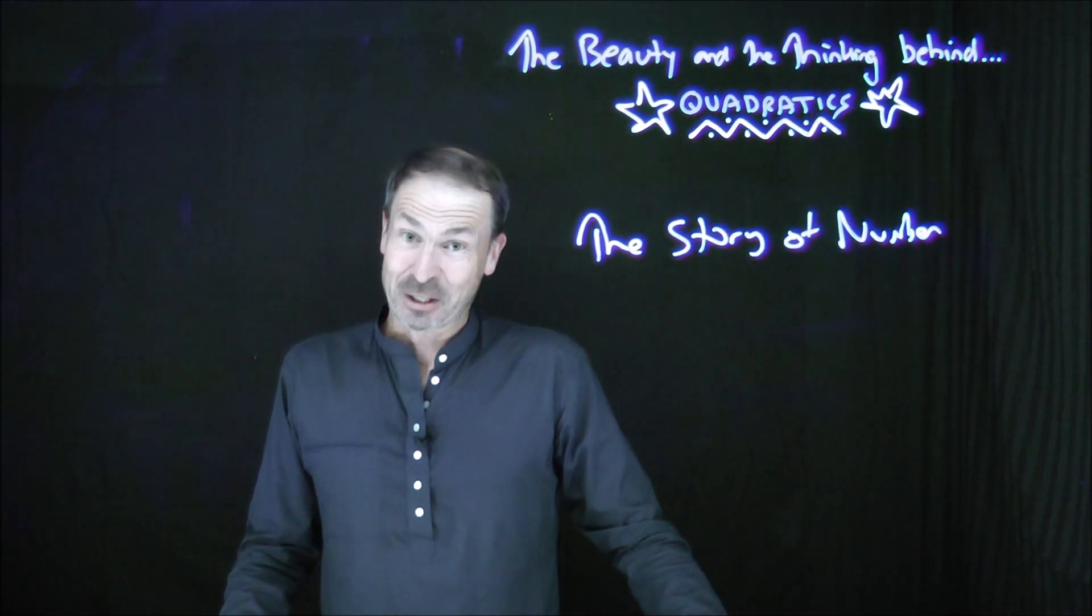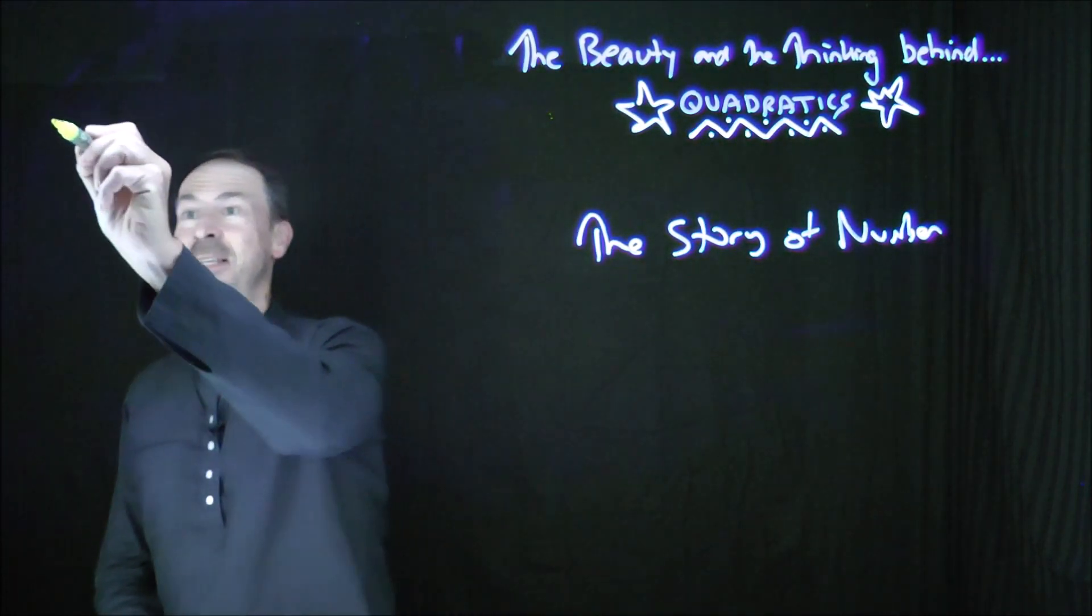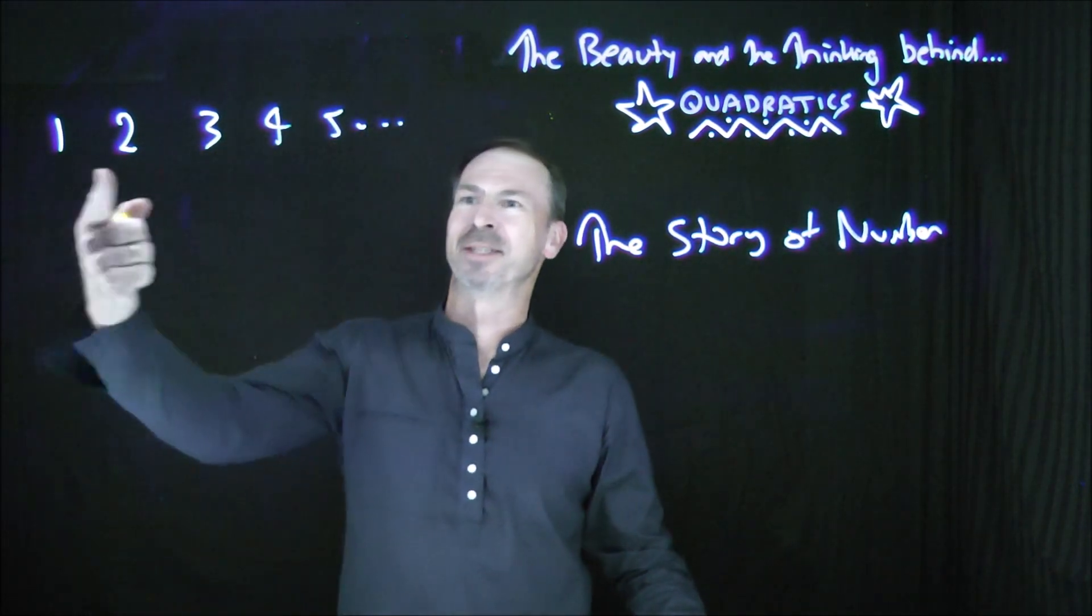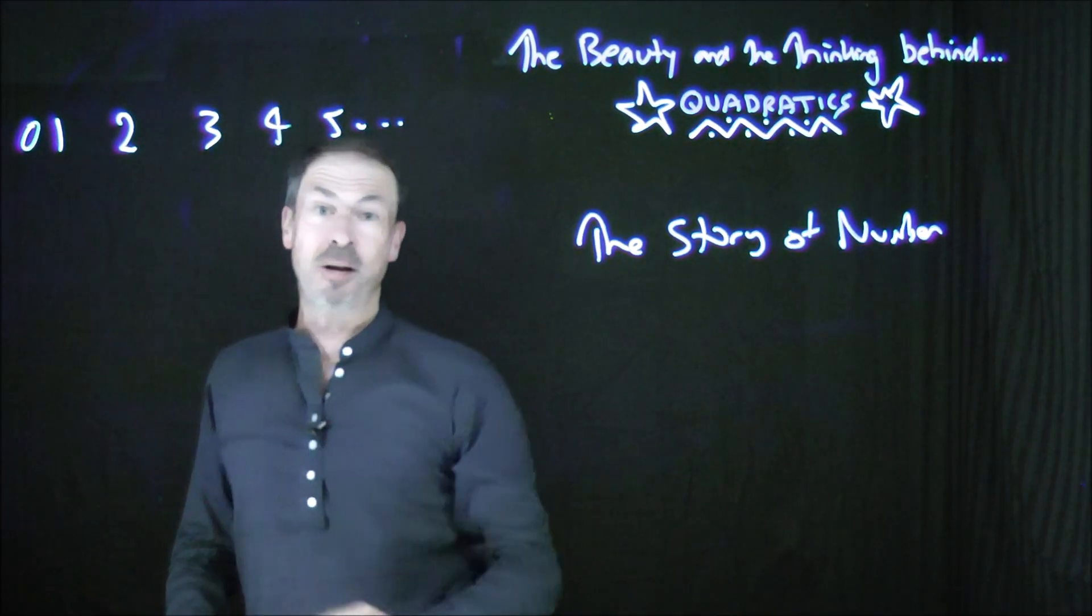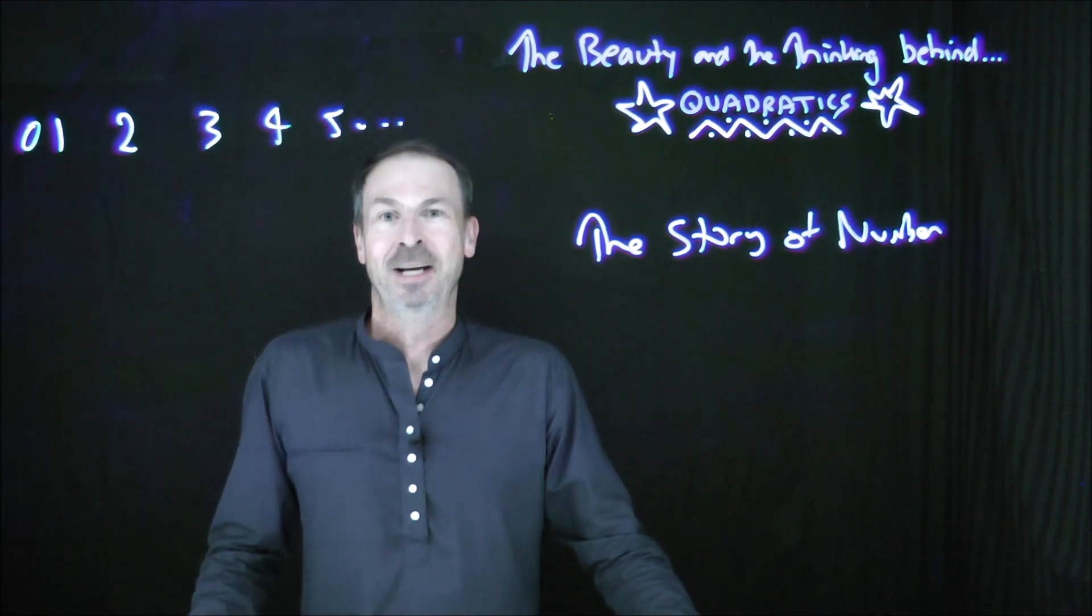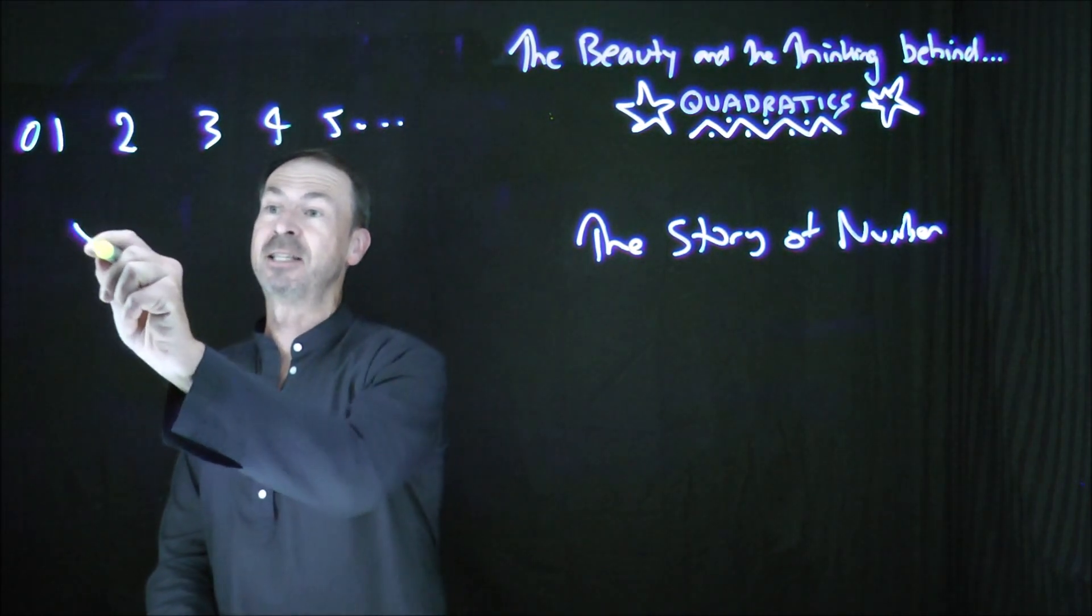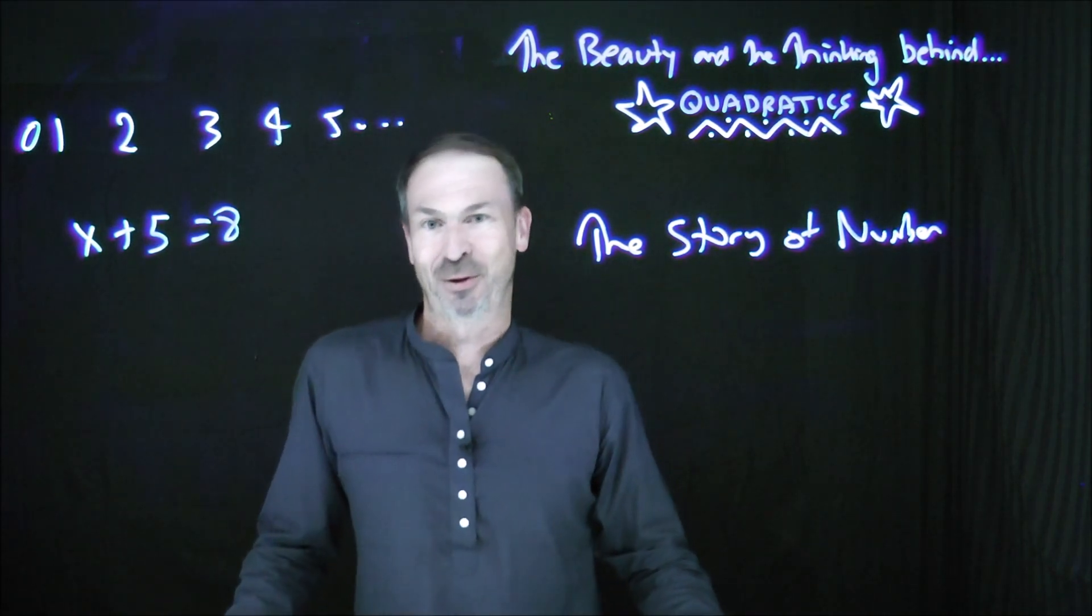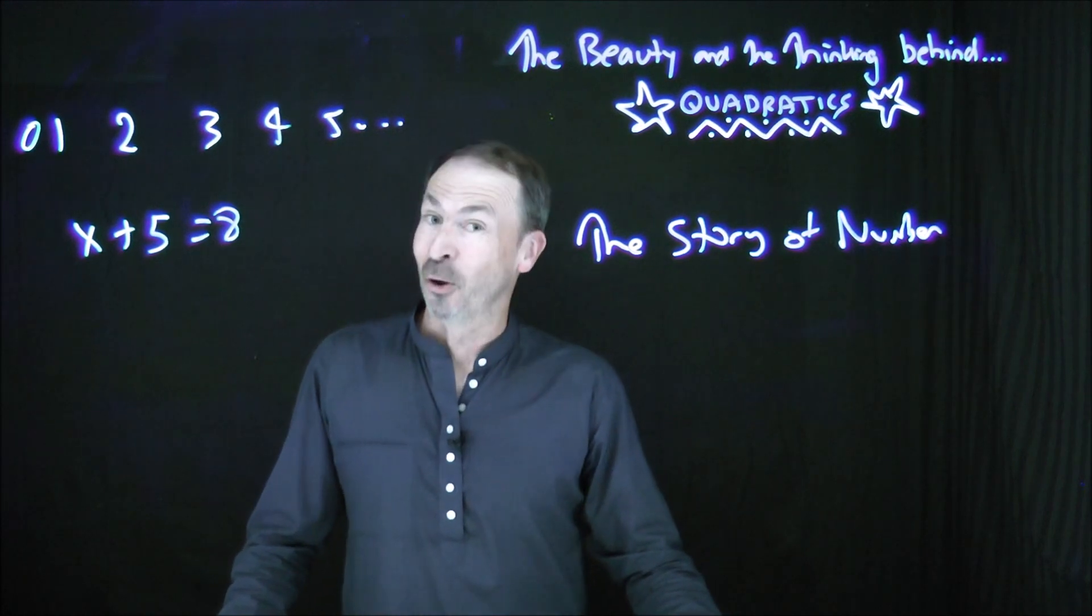When you're very young, the very first types of numbers you learn are the positive whole counting numbers, the numbers that actually count things. There's one block, two blocks, three blocks, four blocks, five blocks - the positive whole numbers, the counting numbers. Some people might include zero in the list, some might not. And these counting numbers are good for solving some equations. For example, I could solve x + 5 = 8 with the counting numbers. x would be 3. So the counting numbers are definitely good for solving some equations, but not all equations.